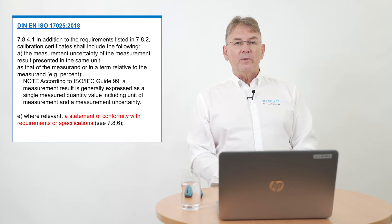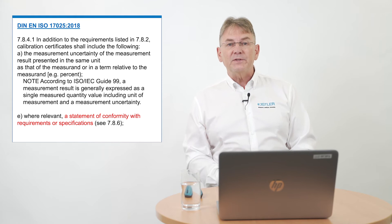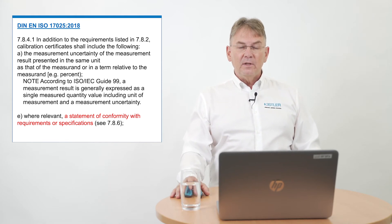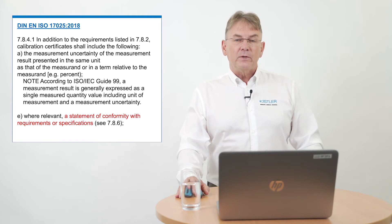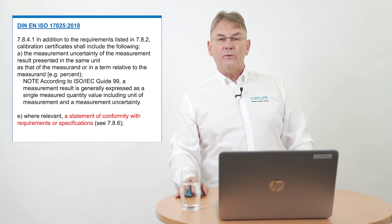Something new in this norm is point E, which says: where relevant, a statement of conformity with requirements or specification. Where relevant — who determines what is relevant? That's you, the customer. If you want a statement of conformity, you can insist on it; it becomes relevant for the laboratory and they have to include it. In the simplest case, it's nothing more than a sentence saying 'this device is compliant to the manufacturer's specifications,' or very short: it passed or it did not pass.